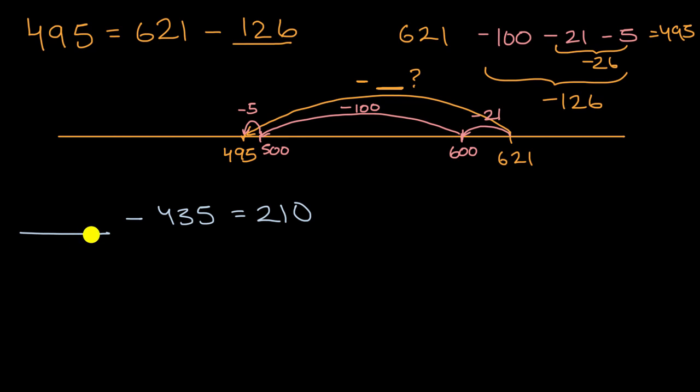Well, this is a little bit different now, because now we're not trying to figure out what to subtract from the larger number. In this situation, we're trying to figure out the larger number. The larger number minus something is equal to 210. But as always, it's useful to draw this on a number line, just to make sure we're thinking about things in a reasonable way.